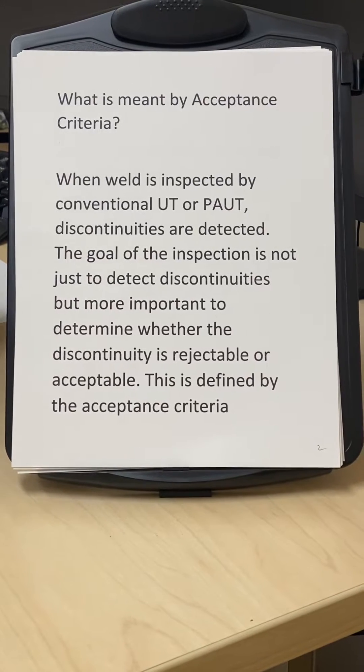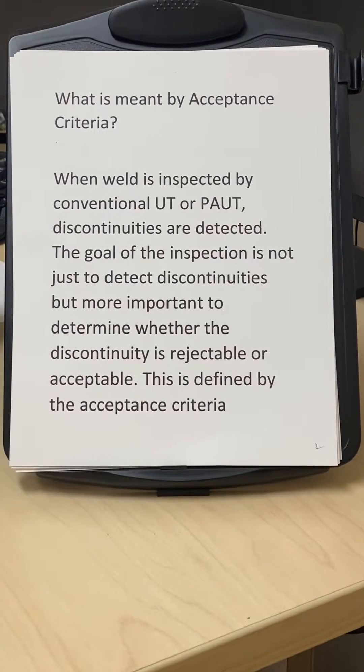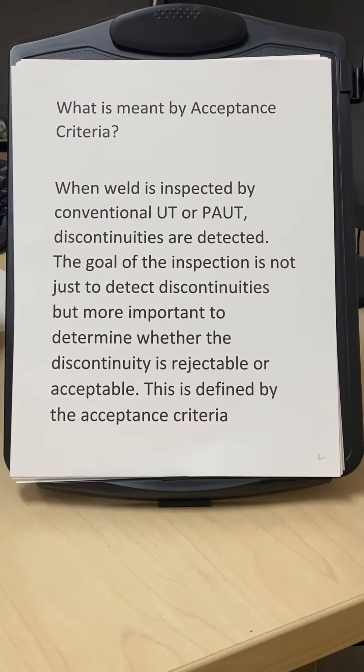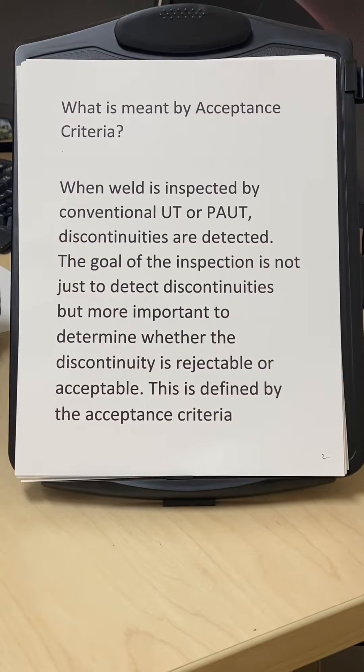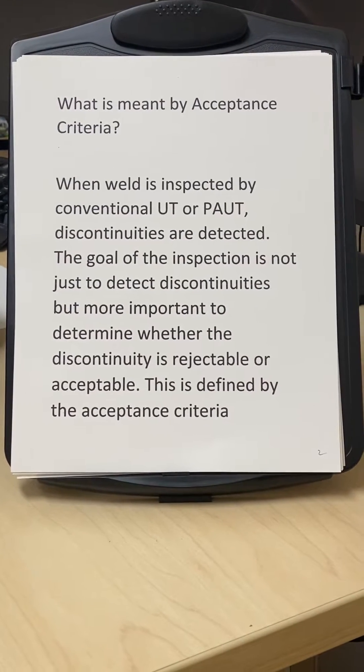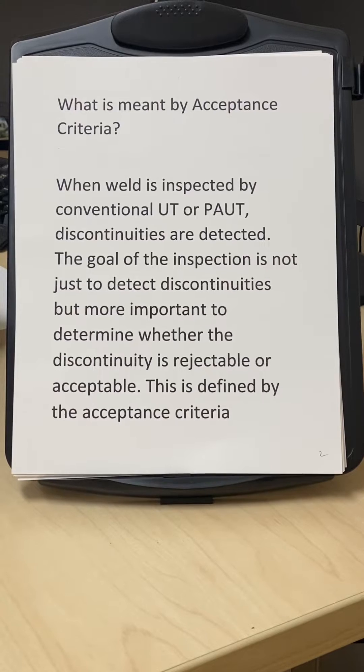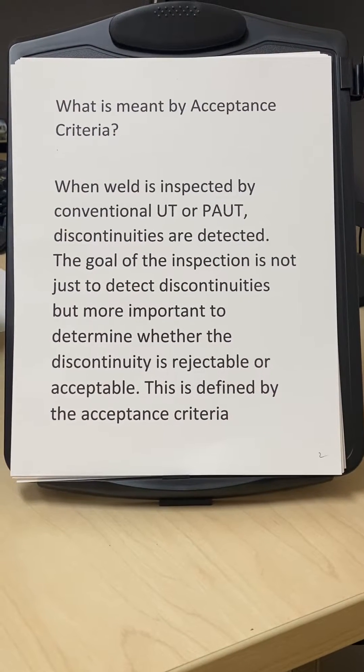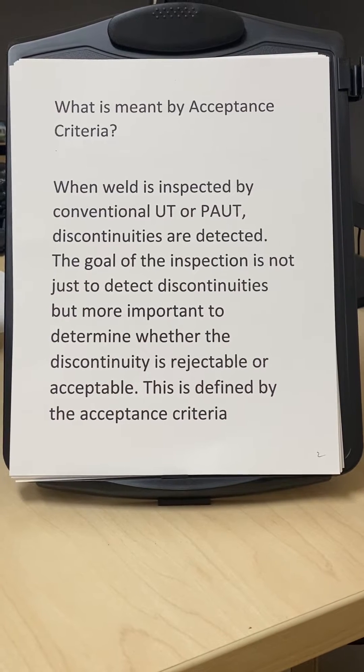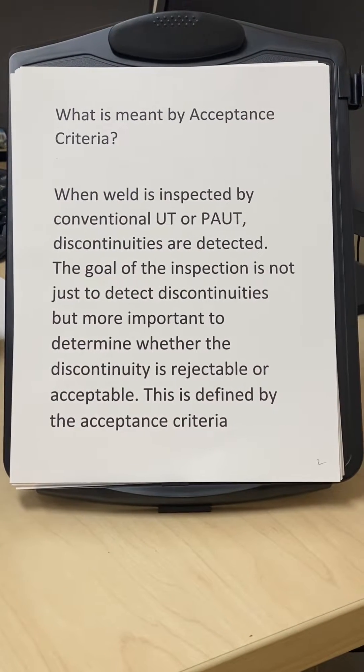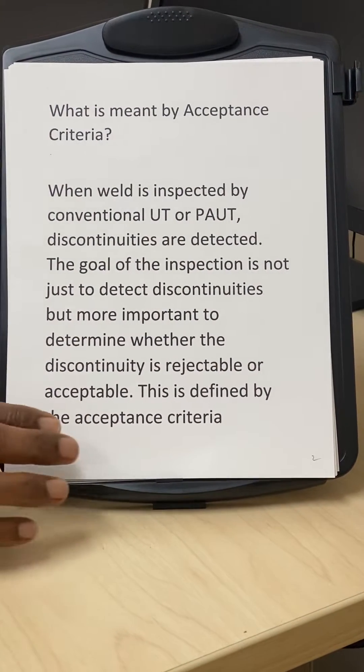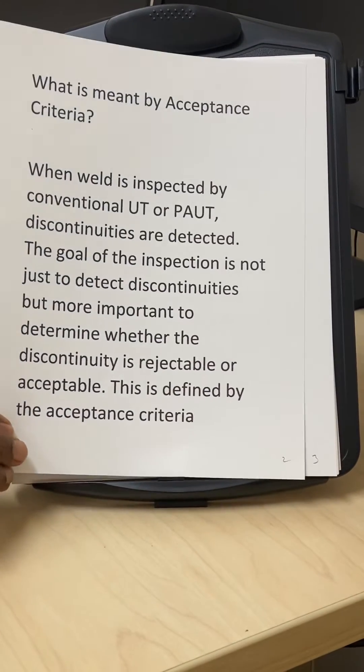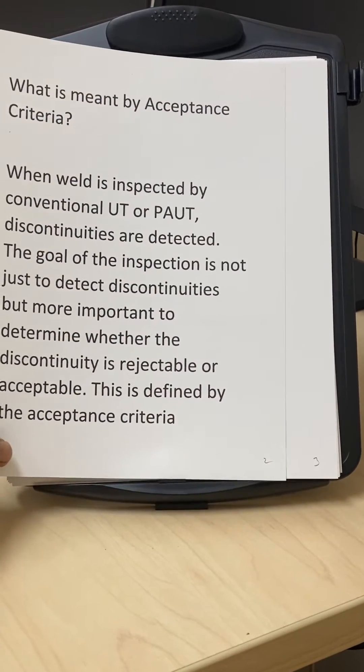What is meant by acceptance criteria? The intent of ultrasonic testing, whether it's conventional or PAUT, is not just to find the discontinuities in the weld, but once we find them, we have to determine whether they are actually acceptable or not acceptable. And how do we do that? That's actually determined by the applicable code.